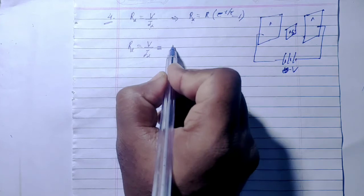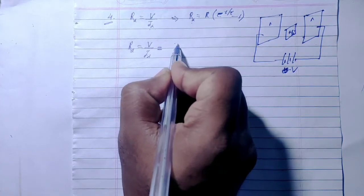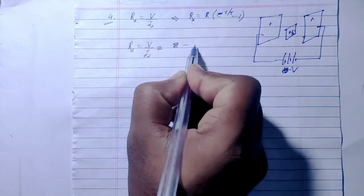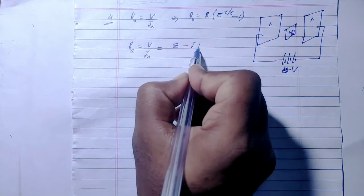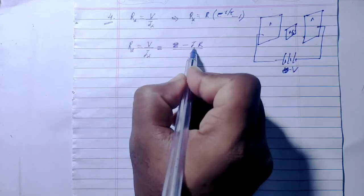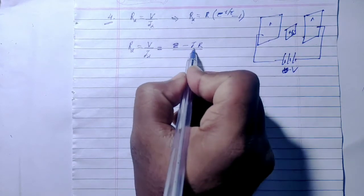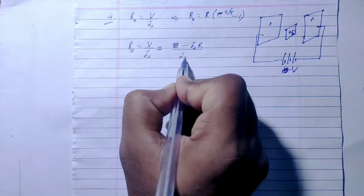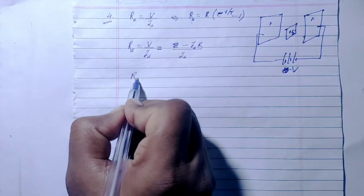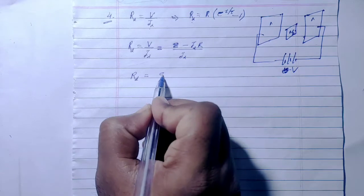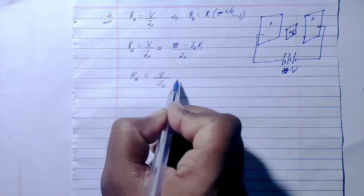So this displacement resistance will be R_d = EMF/i_d - R. From question number 3, the displacement current is i_d = (EMF/2R) × e^(-t/RC).